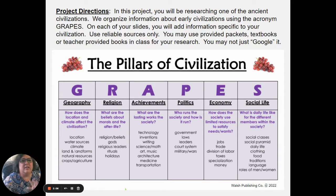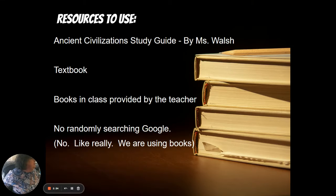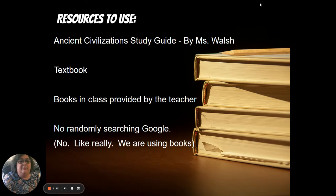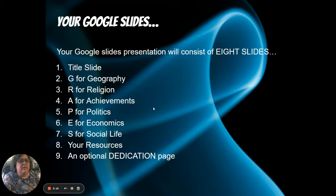To remind you what GRAPES is - you should already know because we've done it in class and had a lot of practice. You're going to use this acronym to find, organize, and present all of your information. We're going to be using reliable sources only for this project. You're only going to use the ancient study guides - there's one for Ancient China, one for Ancient India, and one for Ancient Egypt. You'll also use your textbook provided by the city of Nashua, and books in class if provided. We are not going to be randomly searching Google - all of your information must come from a reliable, vetted written source.